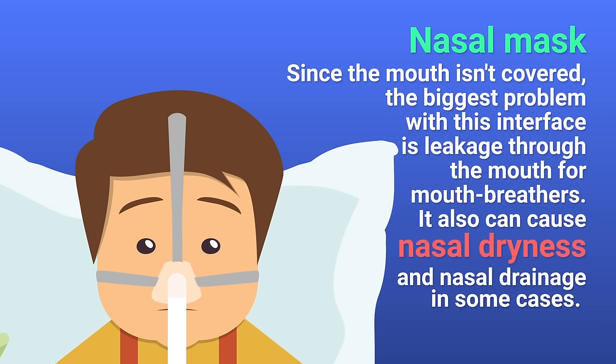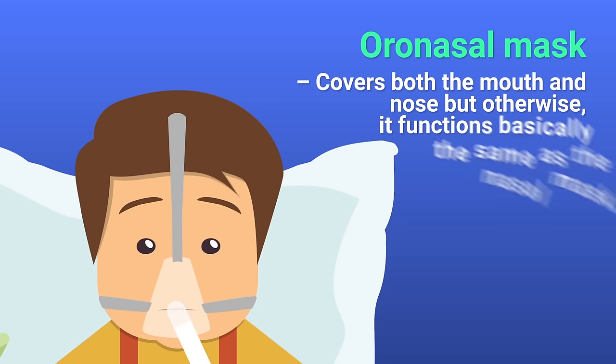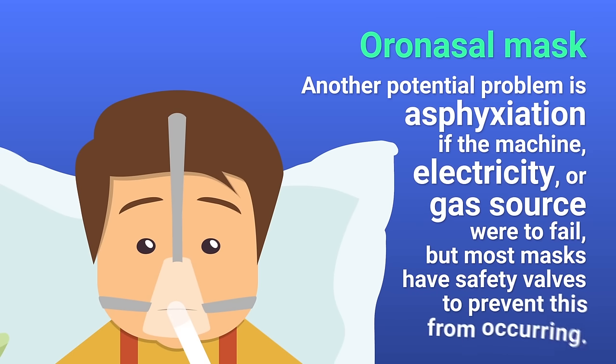Then there is the oral-nasal mask, which covers both the mouth and the nose. It functions similarly to the nasal mask, but since the mouth is covered, it provides a better seal and leakage isn't as big of a problem. However, aspiration and regurgitation can be potential problems with this interface, as can asphyxiation if the machine, electricity, or gas source were to fail — though most masks have safety valves to prevent this.